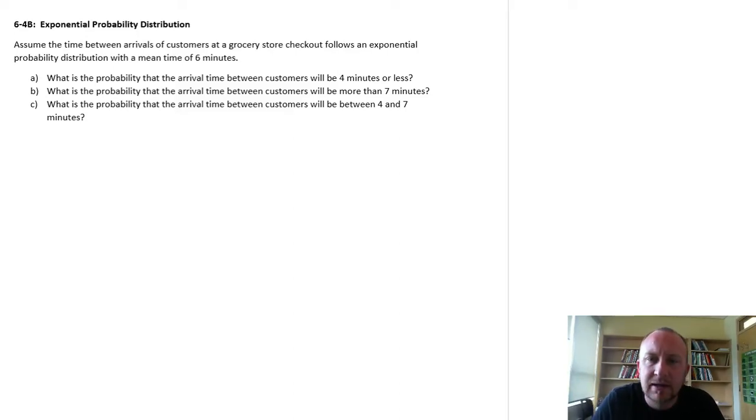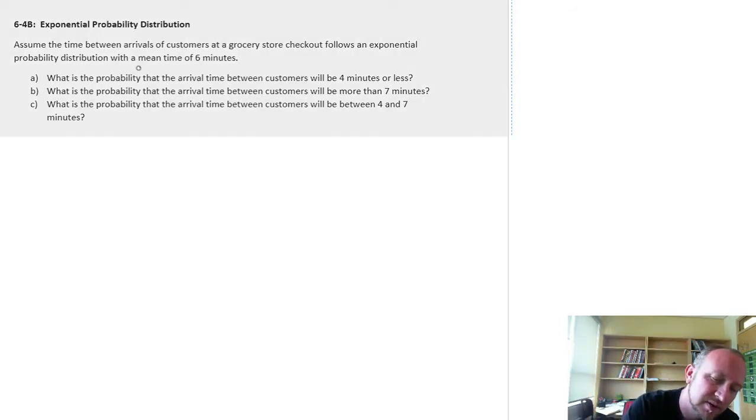Hello and welcome back. Here we're looking at a problem with the exponential probability distribution. This one is similar to the Poisson distribution. If you look at this problem, we're looking at the average time between customers. It follows an exponential distribution with a mean time between customers of six minutes.